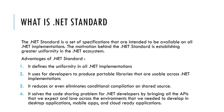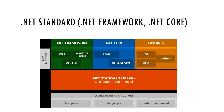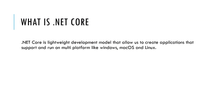It also solves the core sharing problem for .NET developers by bringing all the APIs that we expect across the environments needed to develop different applications like desktop applications, mobile applications, web applications, and even cloud-ready applications. Pictorially, .NET Standard is common for all three supported frameworks: .NET Framework, .NET Core, and Xamarin. If you would like to develop any application, you have to choose the right standard version and check whether that version supports .NET Framework, .NET Core, or Xamarin.